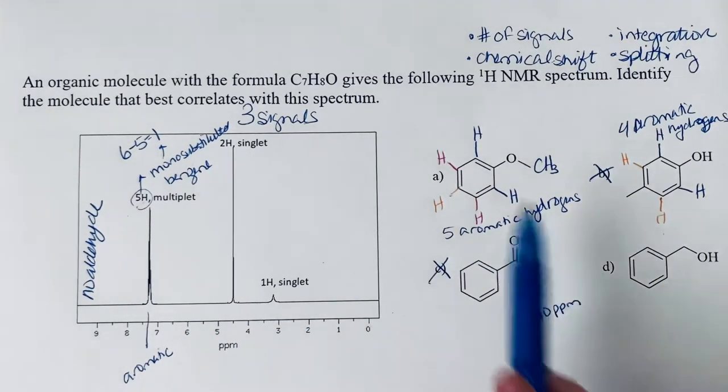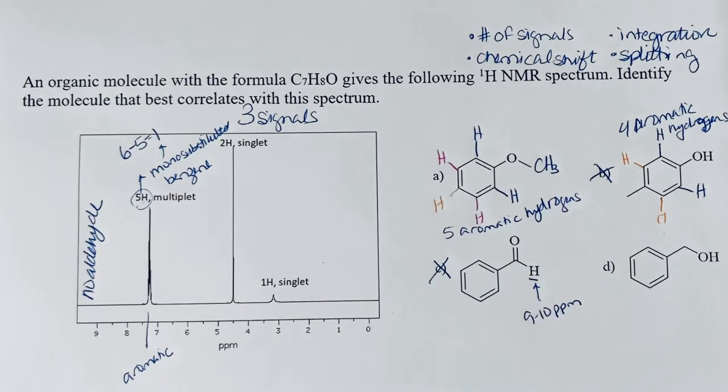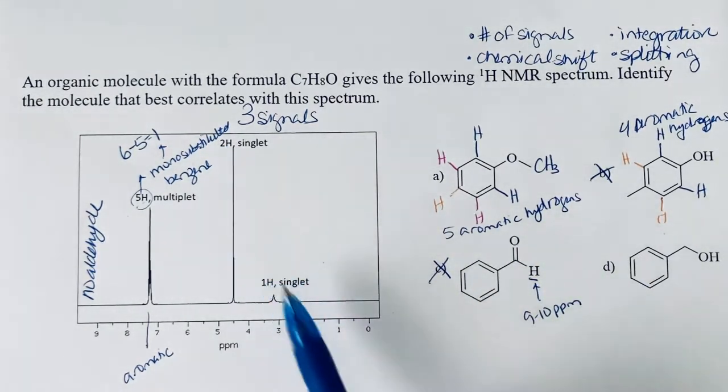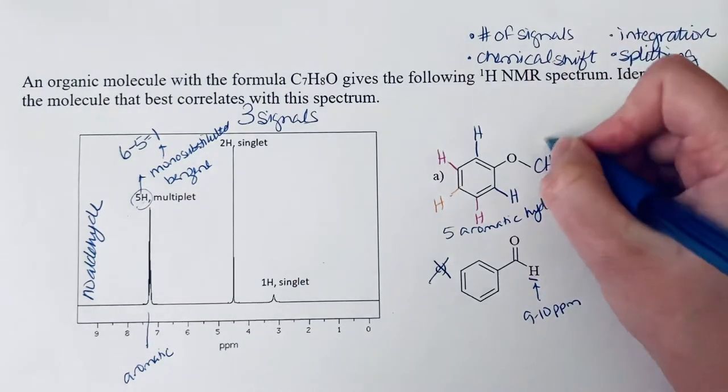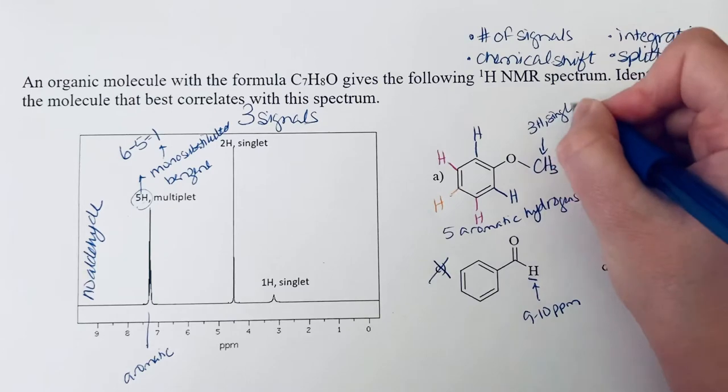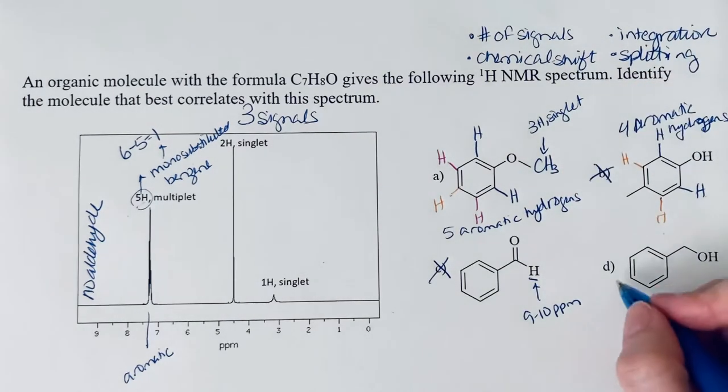So you can get rid of those. And then between A and D, just the integration alone can tell you. Because here you've got two hydrogens and one hydrogen that are different. Here, this would be a three hydrogen singlet. And we're just not seeing that. So our answer must be B.